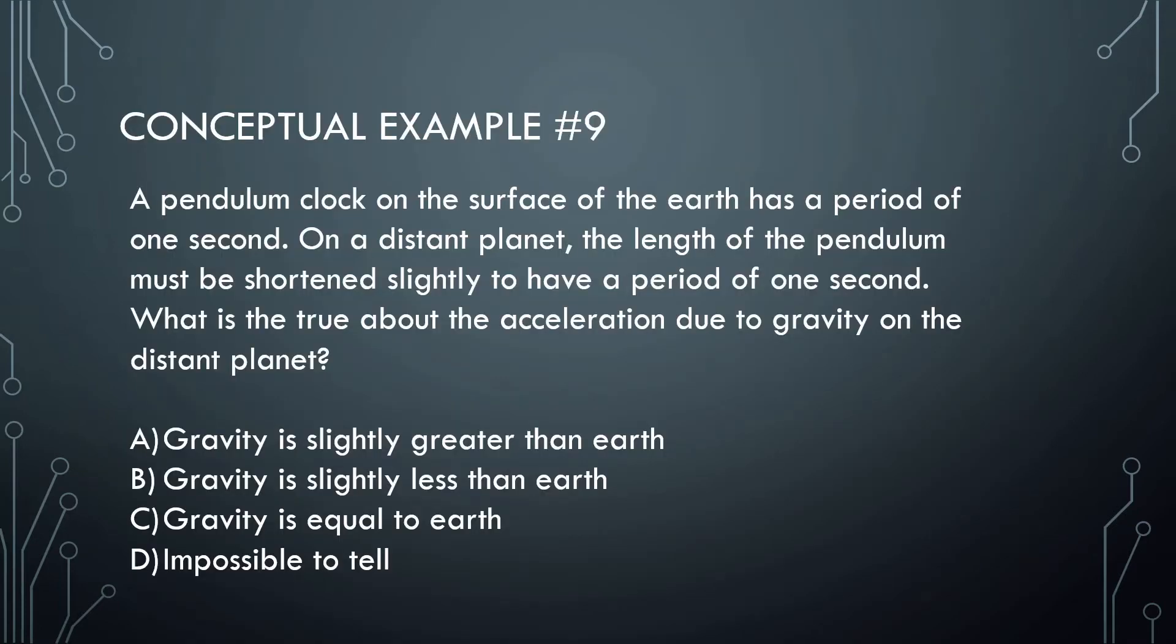A pendulum clock on the surface of Earth has a period of one second. On a distant planet, the length of the pendulum must be shortened slightly to have a period of one second. What is true about the acceleration due to gravity on this distant planet? Is gravity slightly greater than Earth, slightly less than Earth, equal to Earth, or impossible to tell? Let's look at the formula.